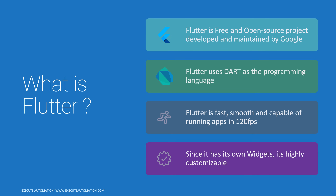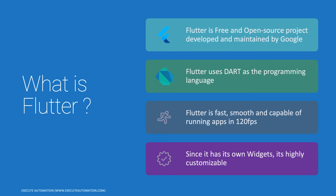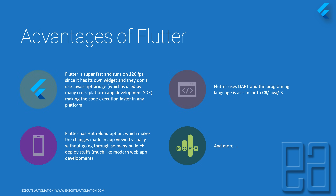Basically you write one single code for any mobile operating system and that code works across different operating systems without any changes, because everything is based on Flutter's own widgets. There is no JavaScript bridge involved to convert widgets into native compilation — everything happens within Flutter's own widget system. Flutter is super fast, runs at 120 fps, and that's why it's a game changer in cross-platform mobile application development.